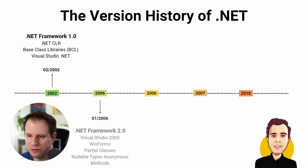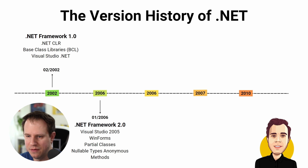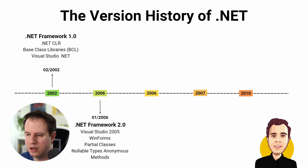The .NET Framework 2.0 was released at the same time as Visual Studio 2005, on January 22nd, 2006. The most notable new C# features included partial classes, nullable types, anonymous methods, and data tables. However, the biggest addition to .NET was the introduction of Windows Forms, or WinForms for short.